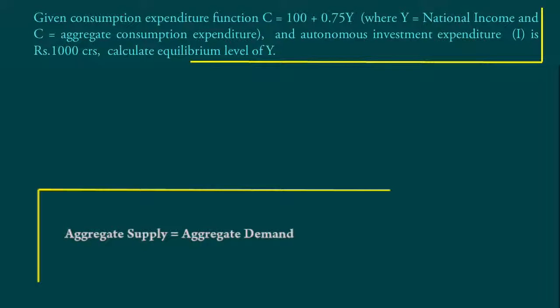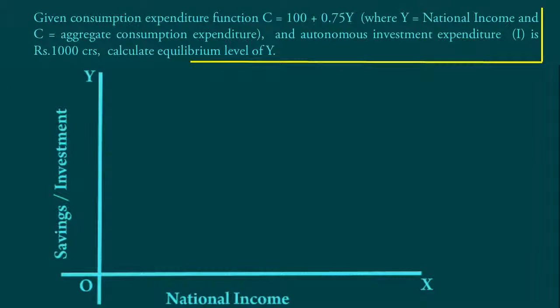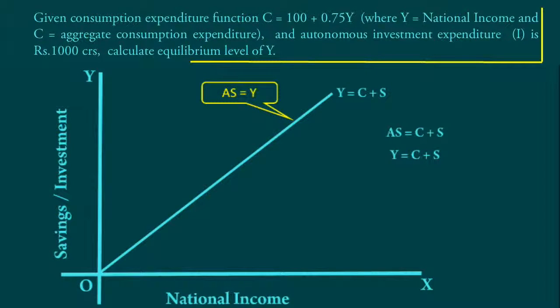We shall analyze the supply side first. Look at the graph. Y = C + S is the Aggregate Supply Curve. Since Aggregate Supply equals C + S, and Y = C + S, the Aggregate Supply Function is AS = Y.